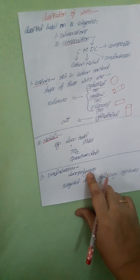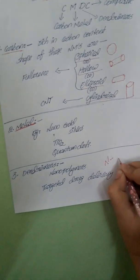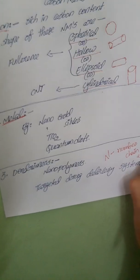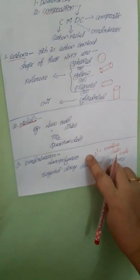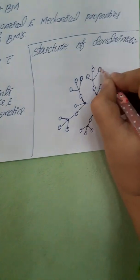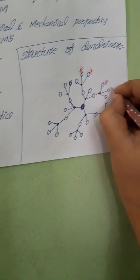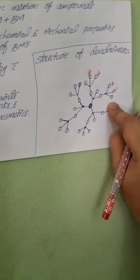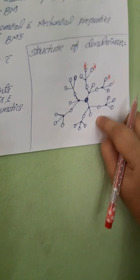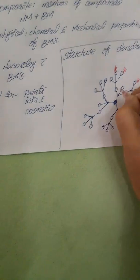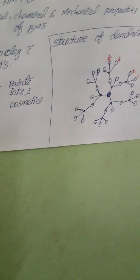Next, we move on to the third type: dendrimers. Dendrimers are nanopolymers containing an infinite number of chain ends. This is the structure of the dendrimer. A dendrimer contains n number of chain ends, and we can add the required functional group at these chain ends — either methyl, carboxyl, carbonyl, hydroxide, or sulfhydryl.